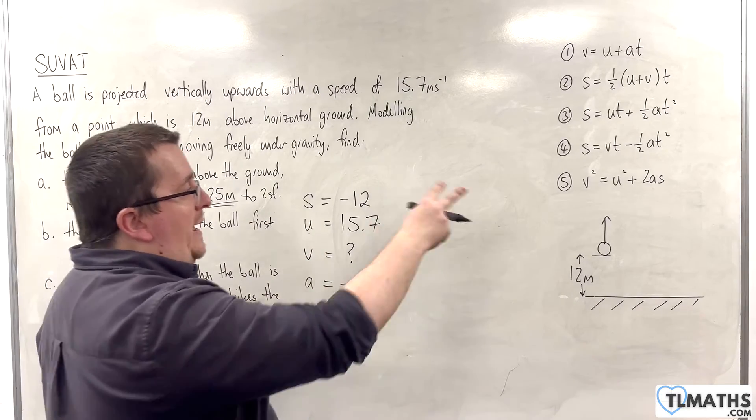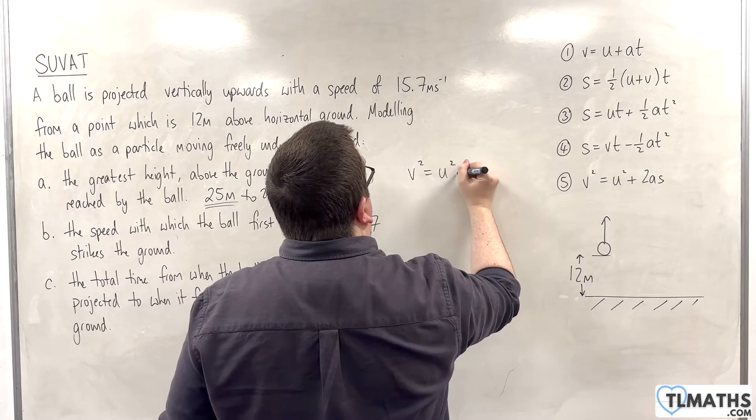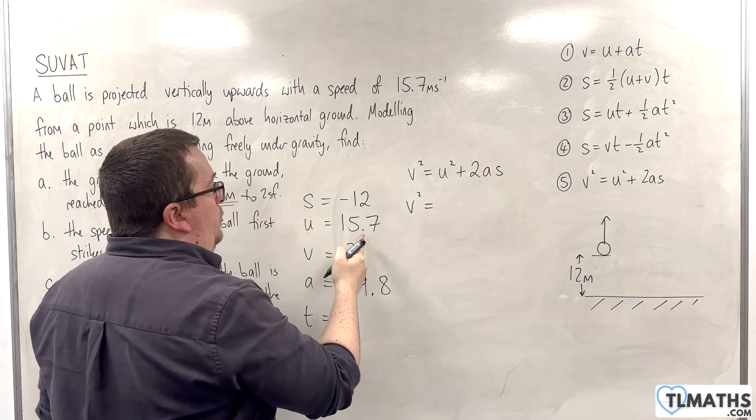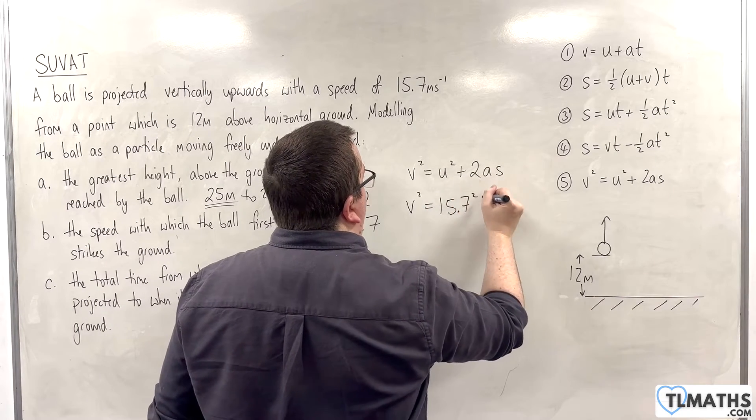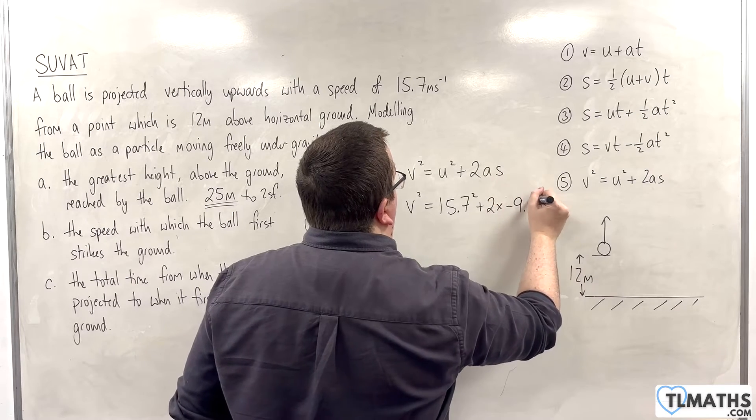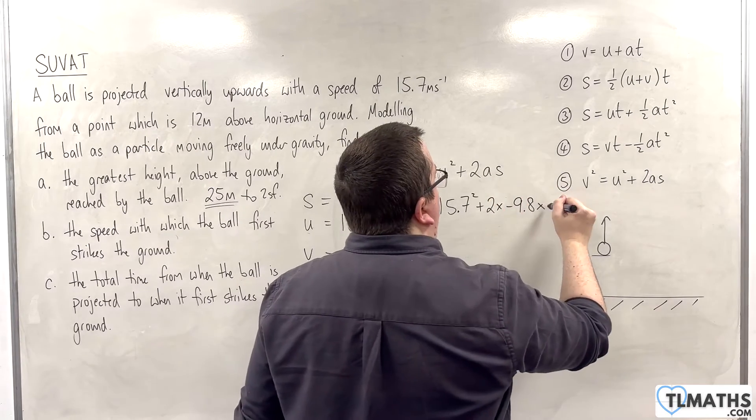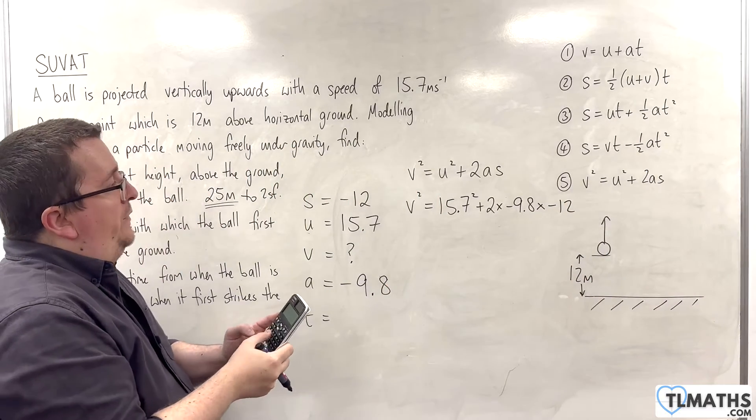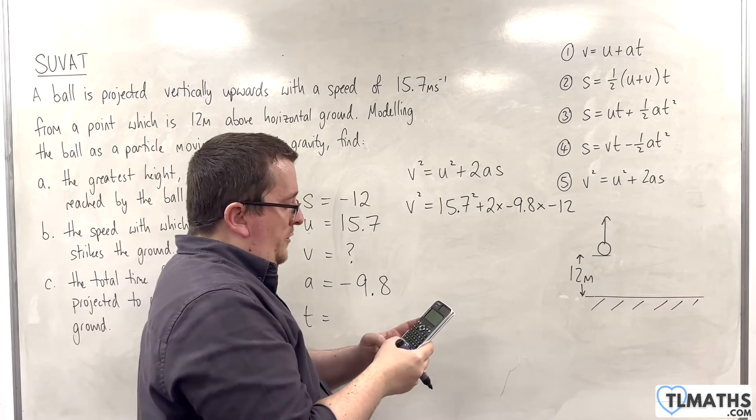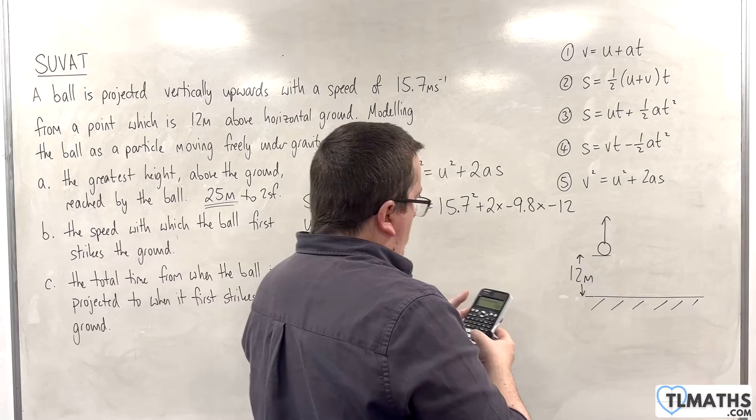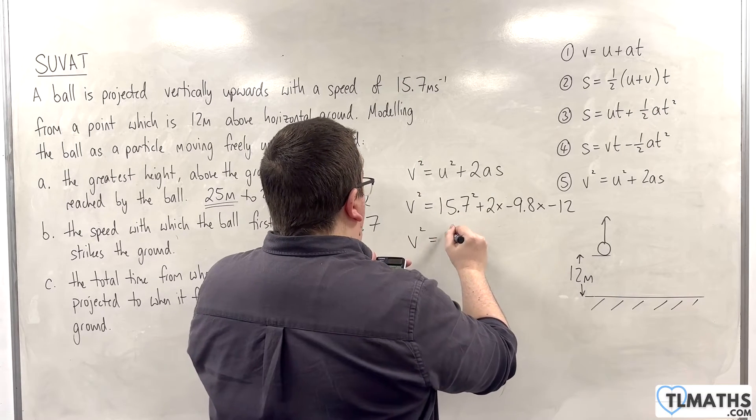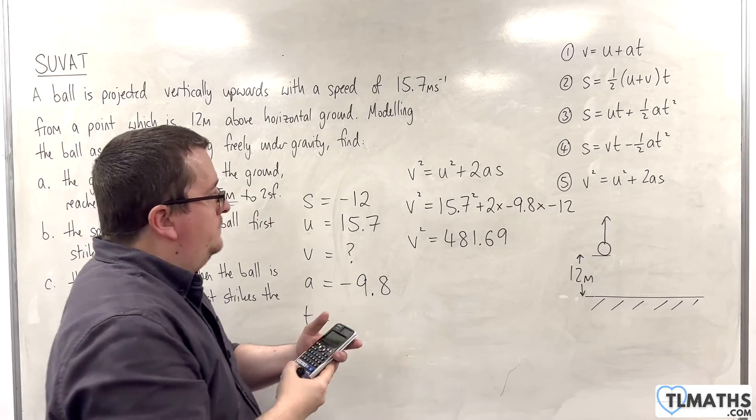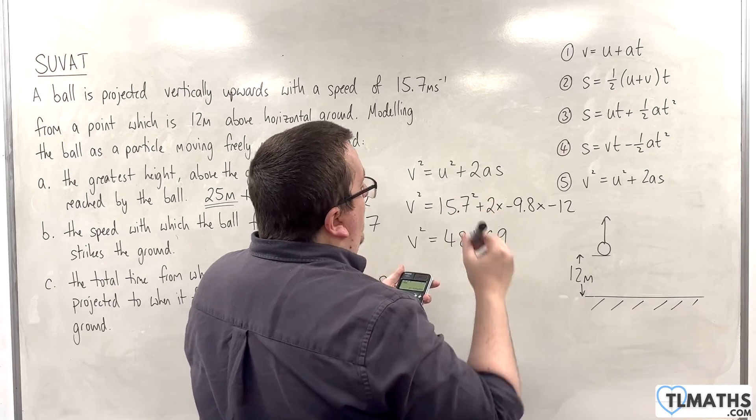So, I want the equation without T, which again is V squared equals U squared plus 2AS. V squared equals U squared, so 15.7 squared, plus 2 lots of minus 9.8 times S, which is minus 12. So, we have 15.7 squared, plus 2 times 9.8 times 12. That's getting me V squared is 481.69. Square root that, and I get the velocity.